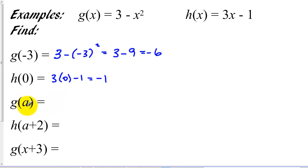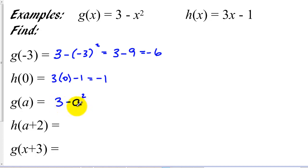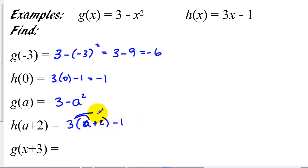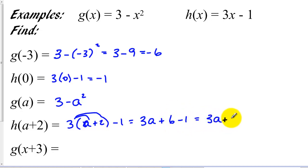The power of function notation is that not only can we substitute numbers in for x, but we can substitute letters and create new functions. If I put a into the g function we now have 3 minus a squared. We can also put an expression in for x — when we do that, we put it in parentheses. So we've got 3 times the expression, plus 2, minus 1. We can simplify this by distributing our 3 and then combining like terms.